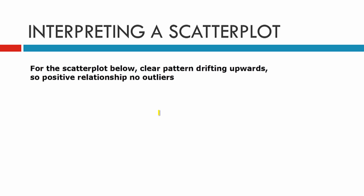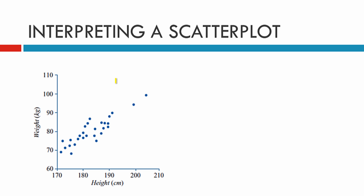The next scatterplot shows a clear pattern drifting upwards. If it's drifting upwards, we have a positive relationship and there will be no outliers. A positive relationship means the gradient goes upward — it goes up the hill — so that is a positive relationship.